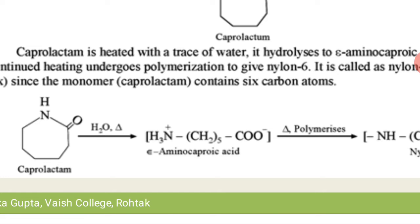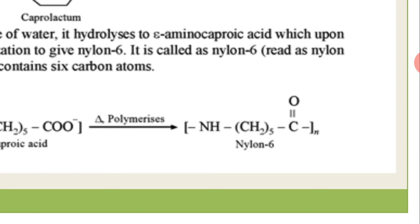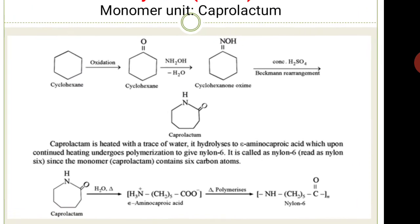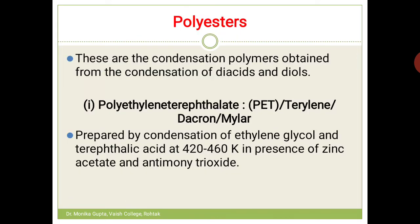When epsilon-amino caproic acid is heated, polymerization occurs and you get -[NH-(CH₂)₅-CO]ₙ-, which is known as nylon 6. Mountaineering ropes, which are very strong, are made of nylon 6.